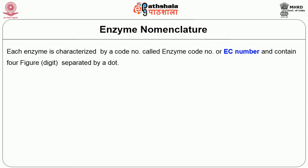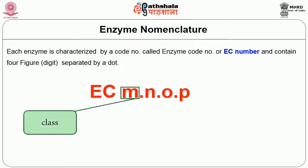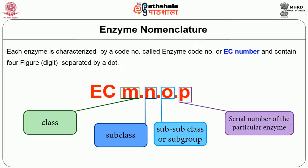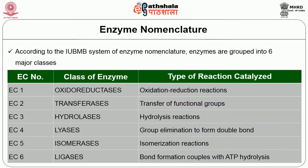Each enzyme is characterized by a code number called the enzyme code number or EC number, containing four digits separated by dots. For example: EC M.N.O.P. The first digit represents the class to which the enzyme belongs; the second digit stands for the subclass; the third digit stands for the sub-subclass or subgroup; and the fourth digit gives the serial number of that particular enzyme. For example, hexokinase, the first enzyme of the glycolytic cycle, has the EC number 2.7.1.1.